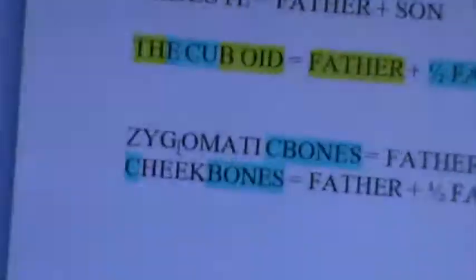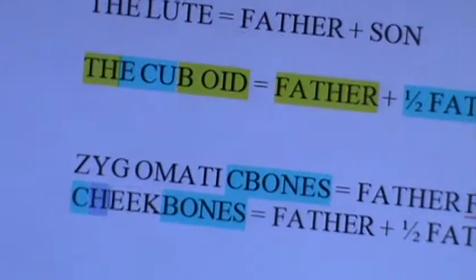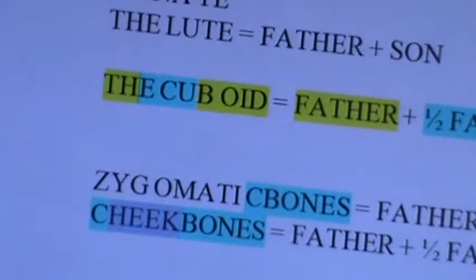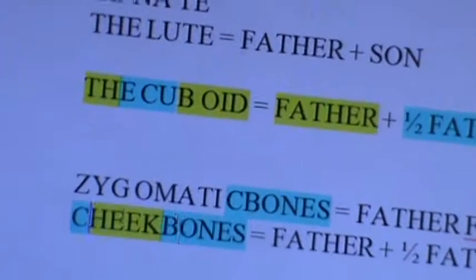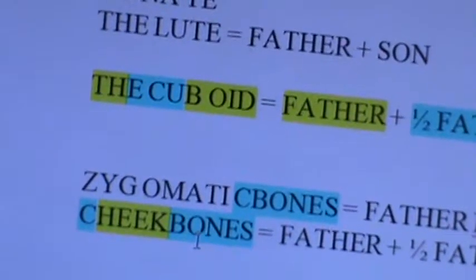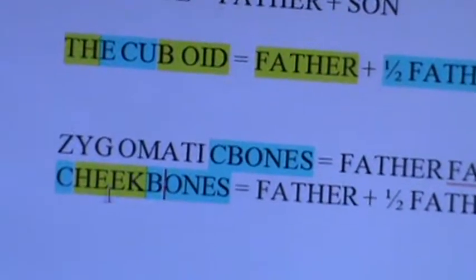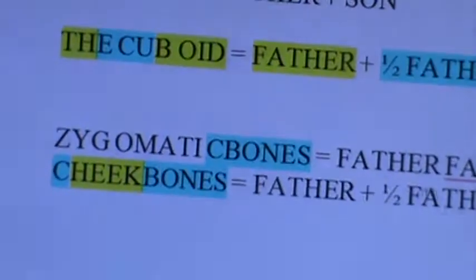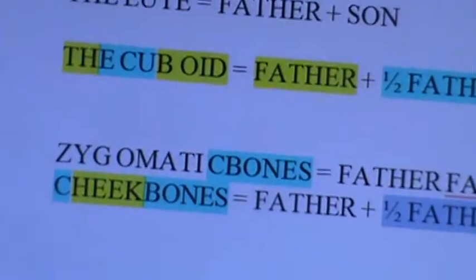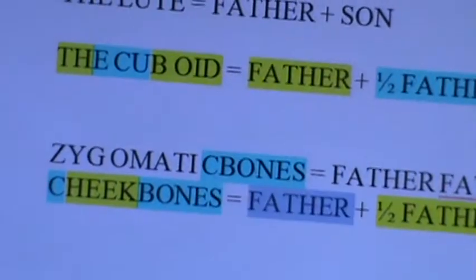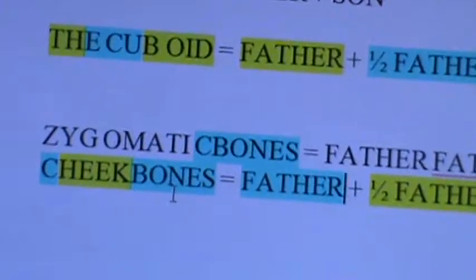What is left over here is precisely half a father. And so this whole thing equals truth. Remember, the word truth can be split into father plus half a father. This was a revelation days ago — the half-father revelation — and we've been solving them ever since. This is a massive confirmation for you on who made your cheekbones.